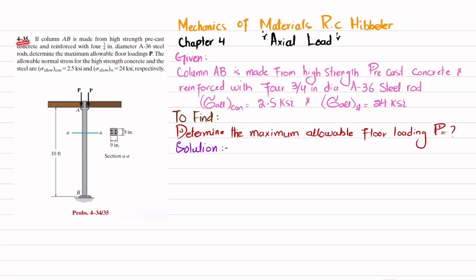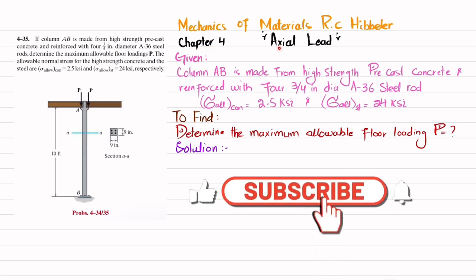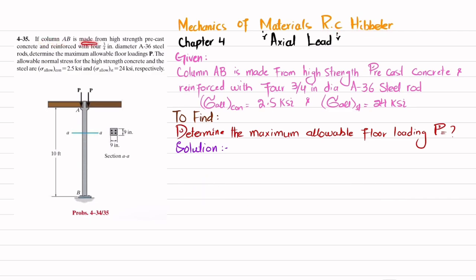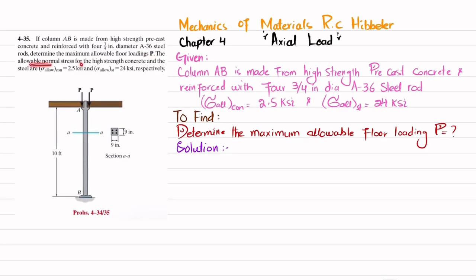Welcome back. In this video we are going to solve problem 4-35, taken from chapter 4 on axial load in the book Mechanics of Materials by R.C. Hibbeler. The statement is: if column AB is made of high-strength pre-cast concrete and reinforced with four 3/4-inch diameter A36 steel rods, determine the maximum allowable floor loading P.